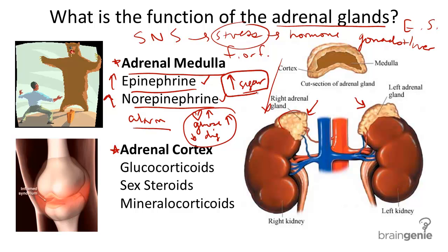So we'll put "increase in sugar." Ultimately, these two hormones increase and extend the effect of the stress response, even after the danger has been eliminated. Which is why you might still feel stressed out even after a traumatic event, even though the danger has passed. The adrenal cortex, on the other hand, has a very different function.